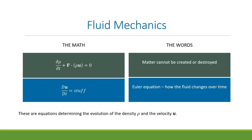This is fluid mechanics 101. There are two quantities of interest: density ρ, a scalar function of space and time, and velocity u, a vector function of space and time. There are two equations governing the evolution of these quantities. The first is the mass continuity equation — matter can't be created or destroyed.